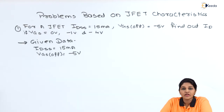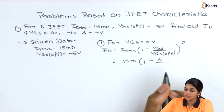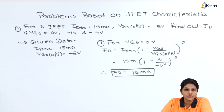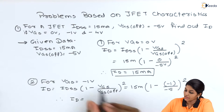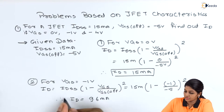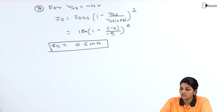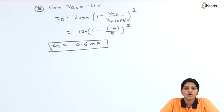For VGS = 0 V, with VGS(off) = −5 V, we obtain ID = 50 mA. Now for VGS = −1 V, we obtain ID = 9.6 mA. For VGS = −4 V, we obtain ID = 0.6 mA. This is how we can obtain the value of ID for different values of VGS.